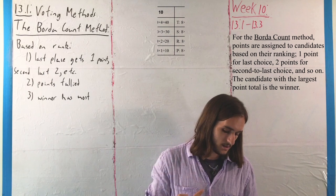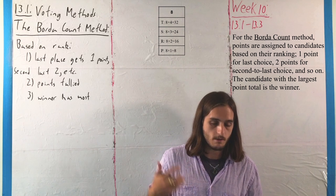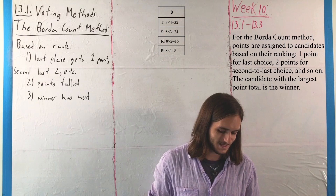For the 8 ballots ordered Tallinn, St. Petersburg, Rome, and Paris, they'd be split out similarly: 4 × 8 = 32 for Tallinn, 3 × 8 = 24 for St. Petersburg, 2 × 8 = 16 for Rome, and 1 × 8 = 8 for Paris.